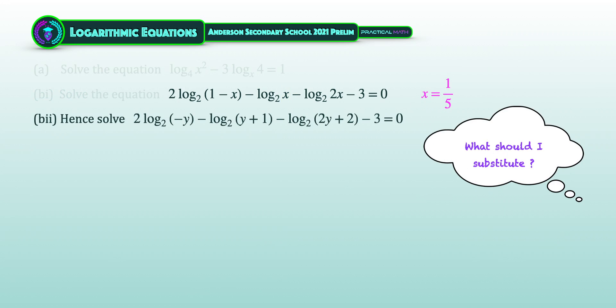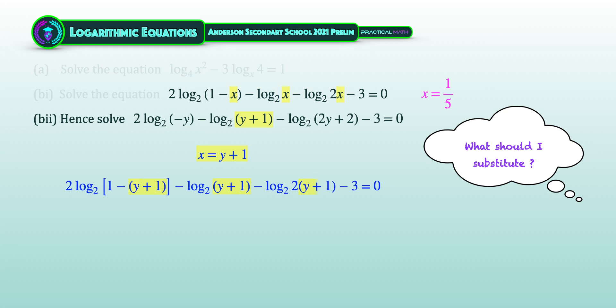For the final part, because of the word 'hence,' we are required to use the results from the previous part. We need to find something to swap out the x in the previous equation. Looking at the second logarithmic term, x in the previous equation is now replaced by (y plus 1) in this equation. Swapping all x's to (y plus 1), we check: 1 minus (y plus 1) equals negative y, and 2 times (y plus 1) equals 2y plus 2 — which matches.